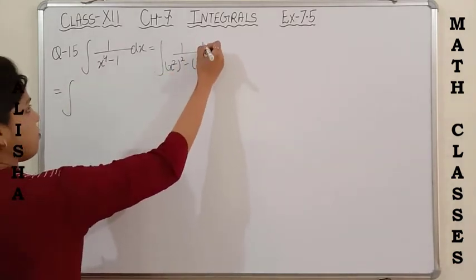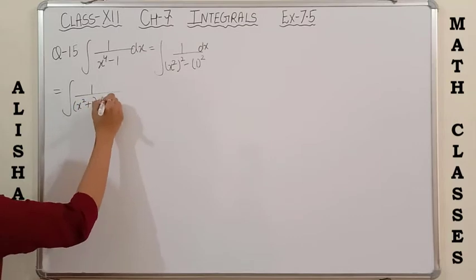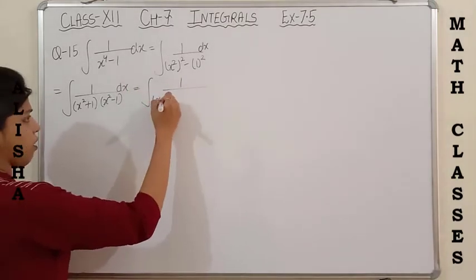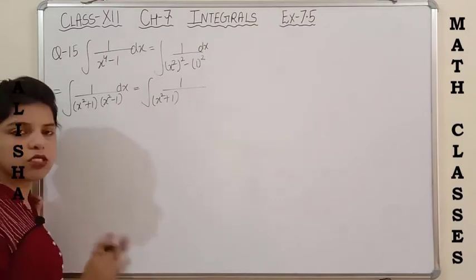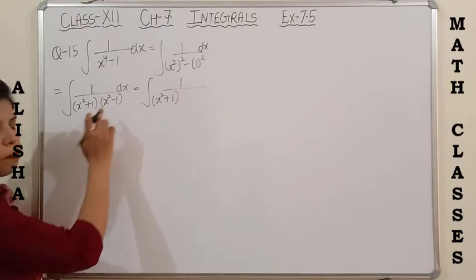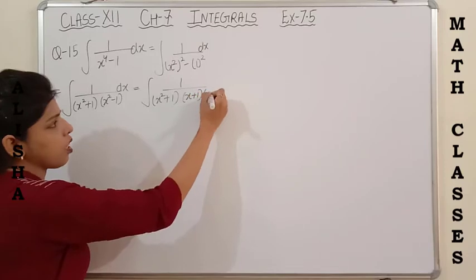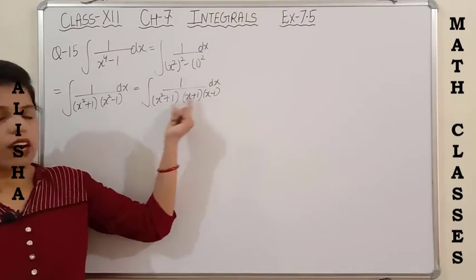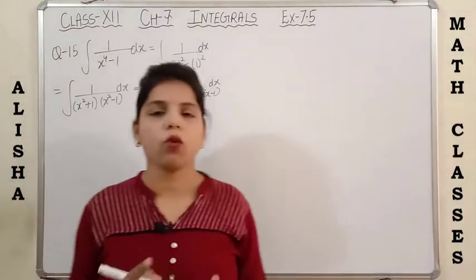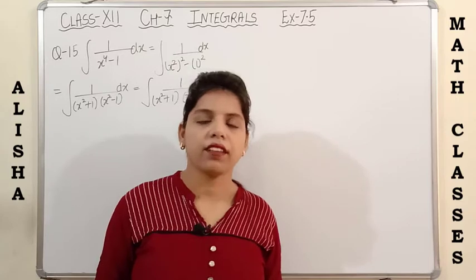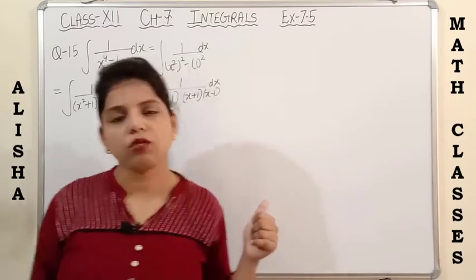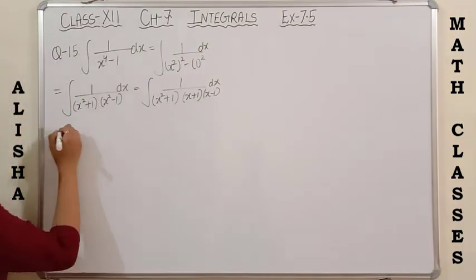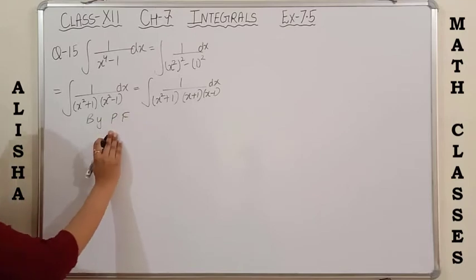x squared minus 1 can be further simplified using a squared minus b squared as (x plus 1)(x minus 1). x squared plus 1 remains as it is since there is no formula for a squared plus b squared. So the final form in the denominator has two linear factors and one quadratic factor. Always try to make only linear or quadratic factors — a cubic factor will not work in integration as we have no particular formula for it.